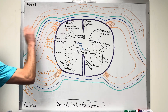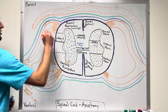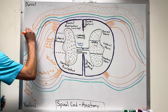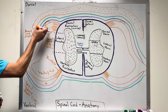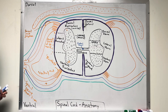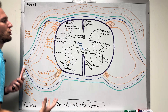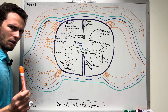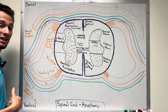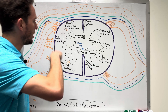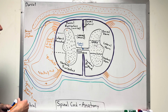On the dorsal aspect of the spinal nerves, there are little bumps called the dorsal root ganglion — a collection of cell bodies on the dorsal side of the spinal nerve. Since this region carries sensory information to the spinal cord, these are all sensory neuron cell bodies housed in the dorsal root ganglion.